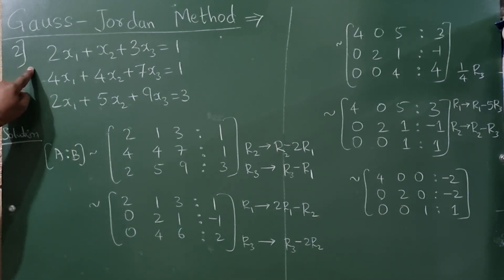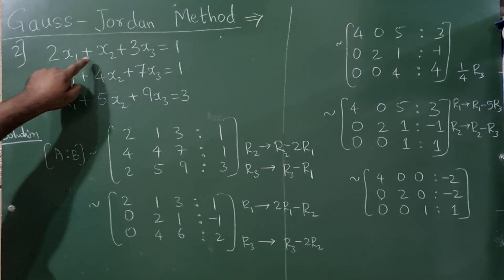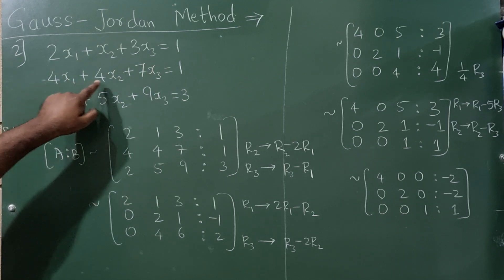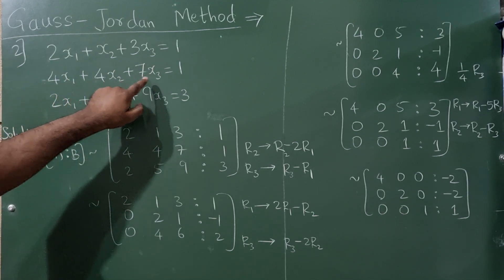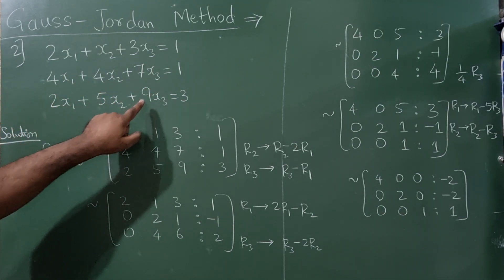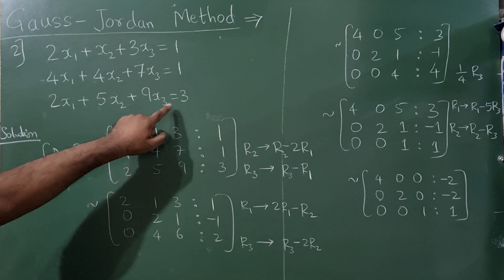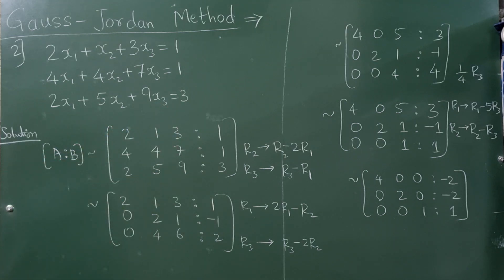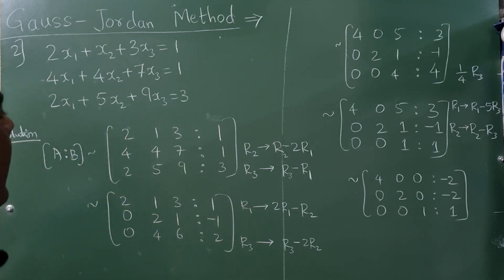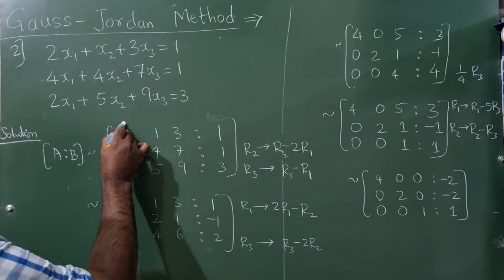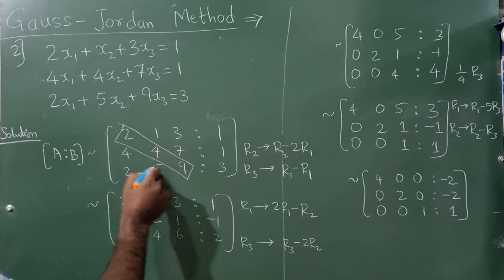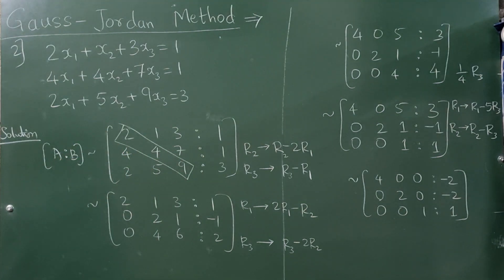Now in the second question: 2x1 + x2 + 3x3 = 1; 4x1 + 4x2 + 7x3 = 1; 2x1 + 5x2 + 9x3 = 3. I have written this in matrix form. As you know, these are the diagonal elements and rest all elements you have to make 0.